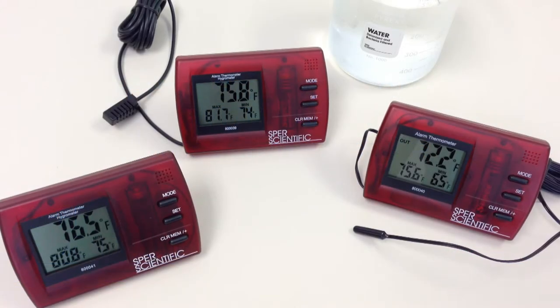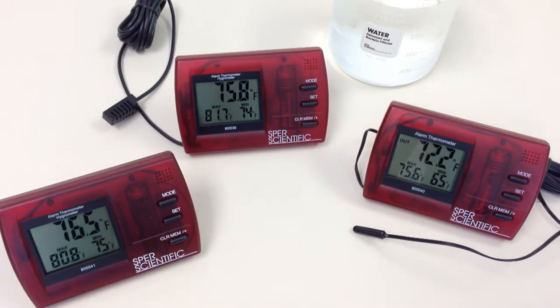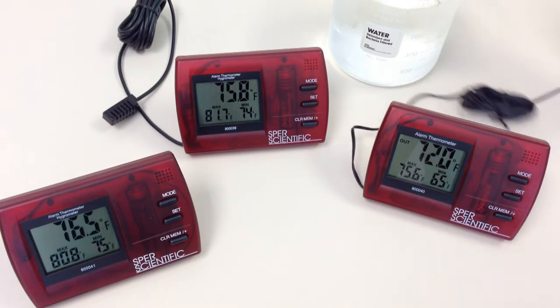These alarm thermometers and hygrometers enable you to set minimum and maximum temperature and humidity alarms and recall the results. When the temperature or humidity exceeds your preset parameters, an audible alarm will sound.